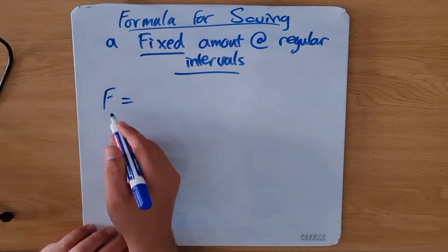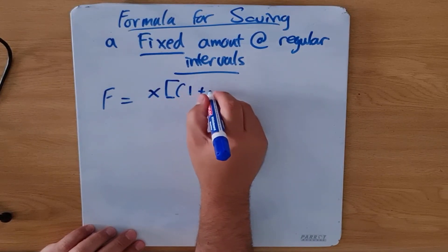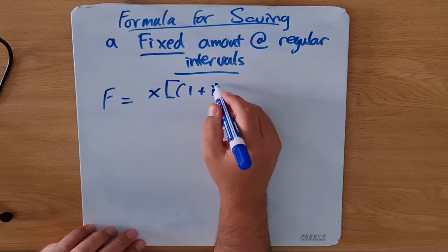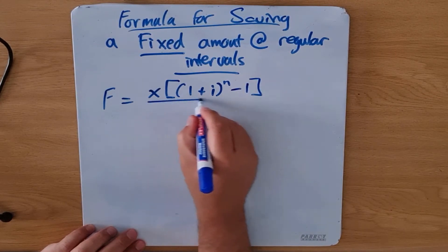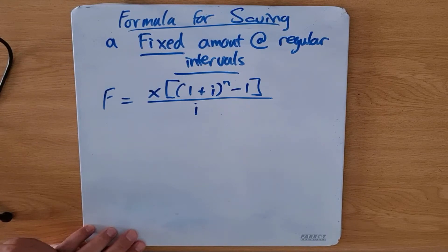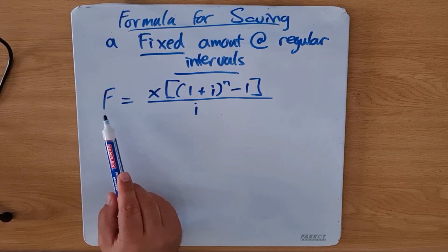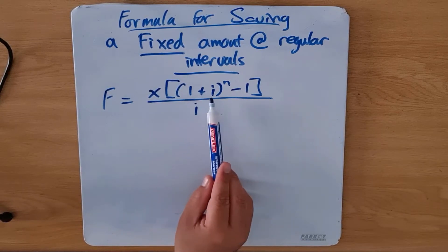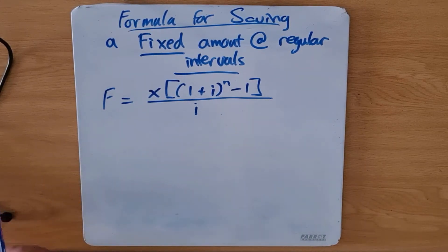The formula reads: F equals x, multiplied by the larger bracket containing one plus i, where i is the interest rate given by the bank, to the exponent n — which is the number of payments you are going to be making — minus one, and all of that is over i. So to recap: F is the money you get out at the end, x is the amount of money you deposit every month, i is the interest rate given by the bank, and n is the number of payments you make.